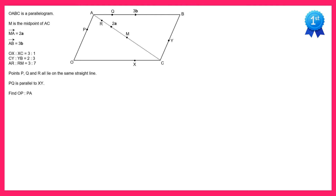Hello and welcome to the solution video to spicy question number 49. In this question we're told that O, A, B, C is a parallelogram. This means the vector from A to B, which we can see is 3B along the top, must be the same as the vector along the bottom from O to C. So O to C is also 3B.